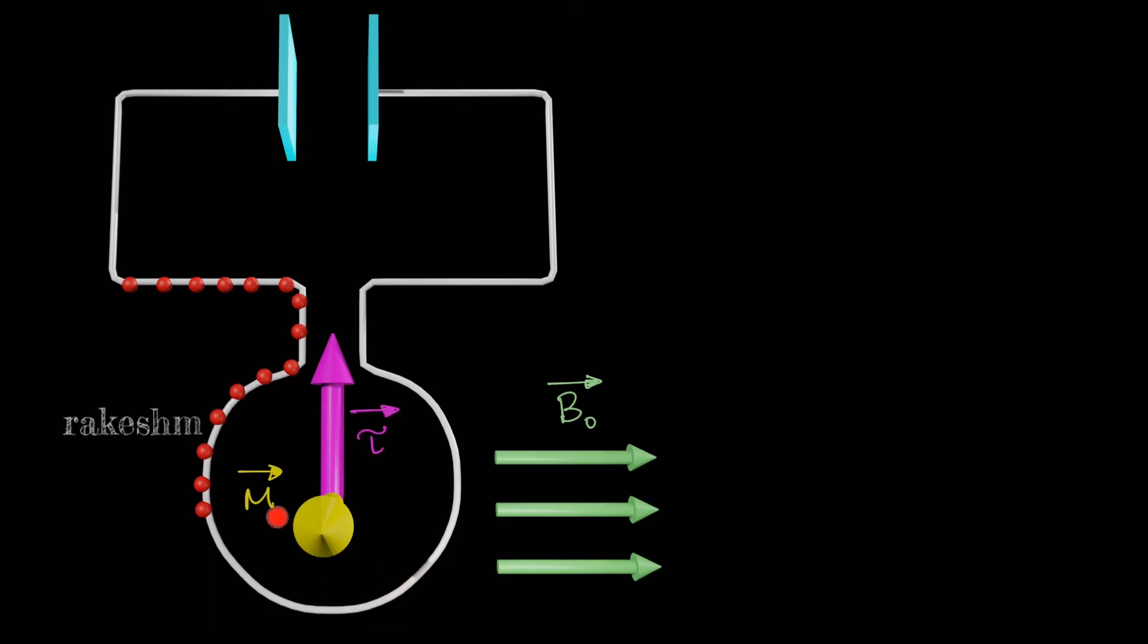Now as this coil has a magnetic moment M⃗, this interacts with the external magnetic field to produce a torque on the coil. The torque acting on the coil is τ⃗. The direction of τ⃗ can be found from the formula M⃗ × B⃗. As this torque acts on this loop, it will produce a turning effect on the loop. Let's see how this torque turns the loop.